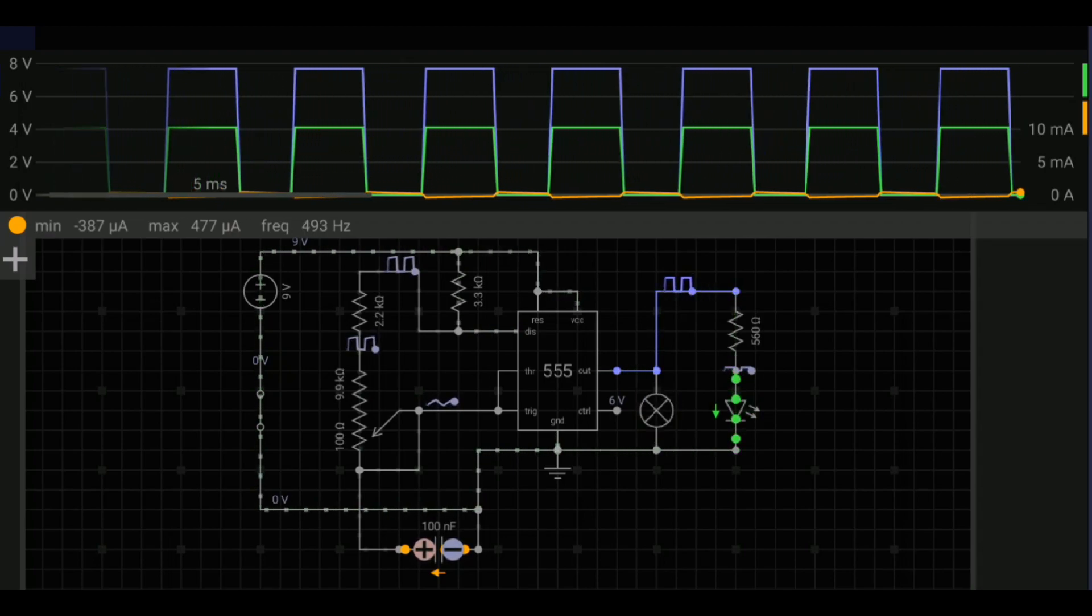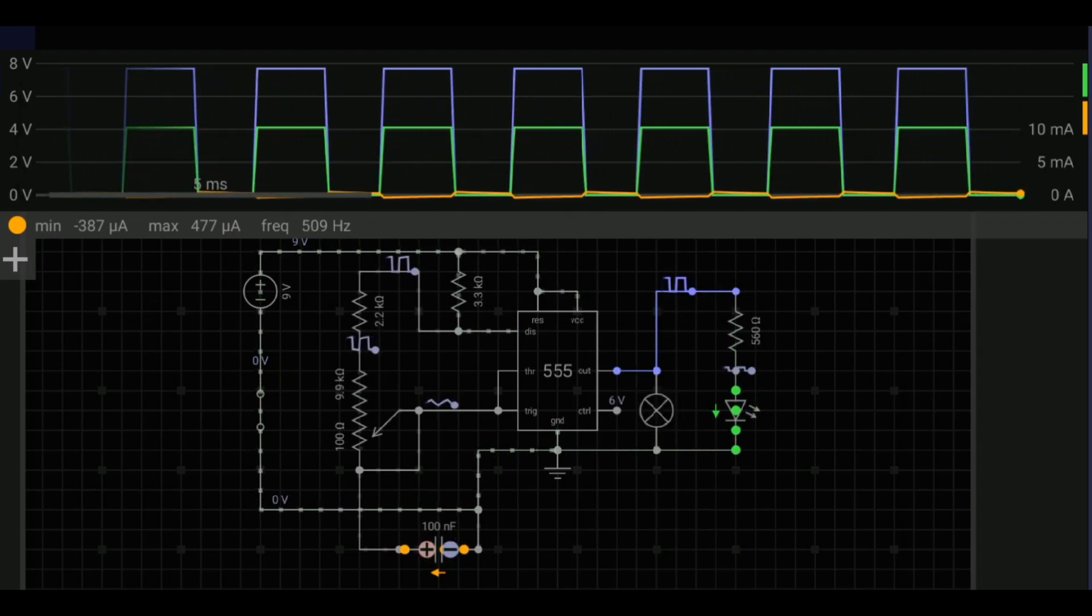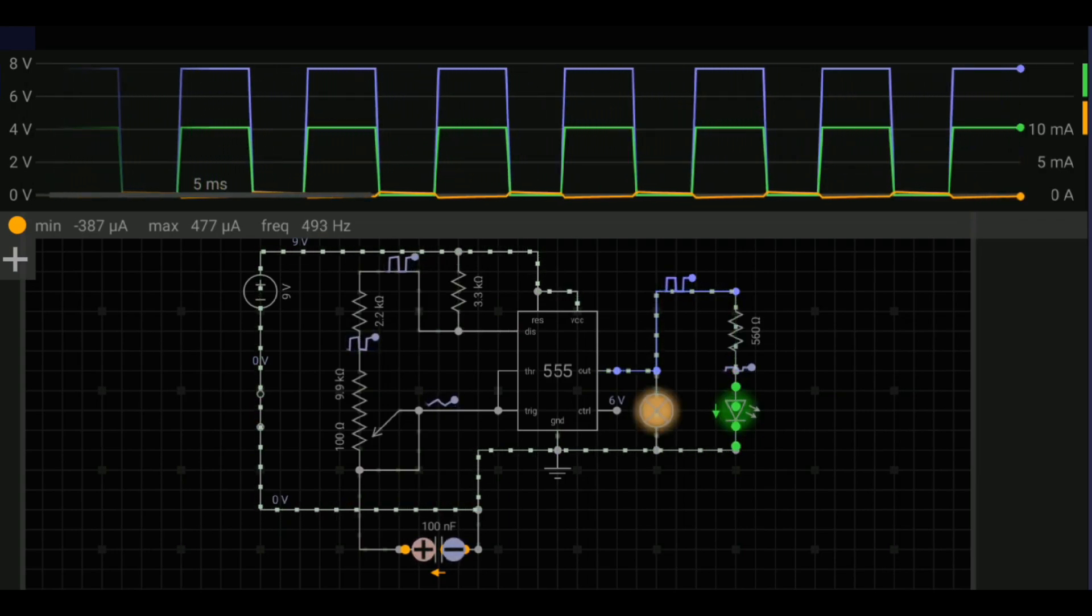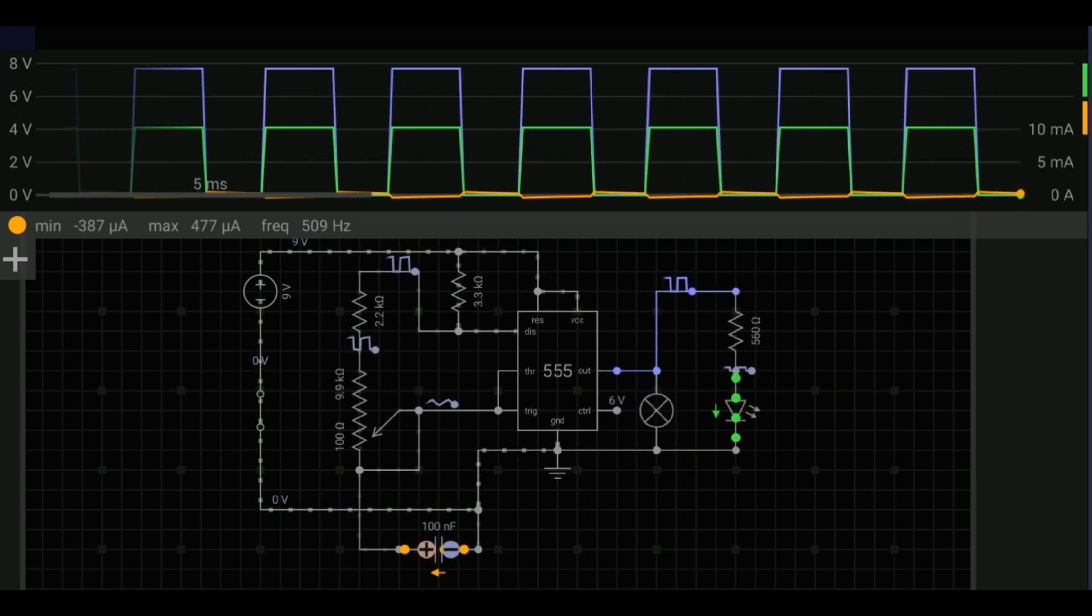To create an insect repeller using a 555 timer IC without a transistor, follow these steps. Components needed: 555 timer IC, resistors R1 and R2, capacitor, piezoelectric buzzer, and power source battery.